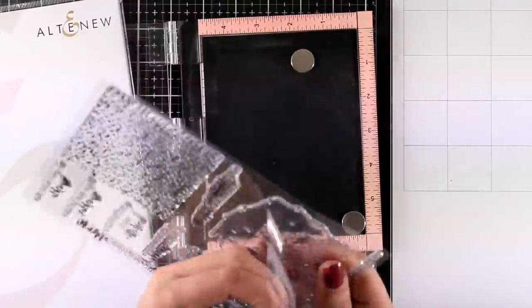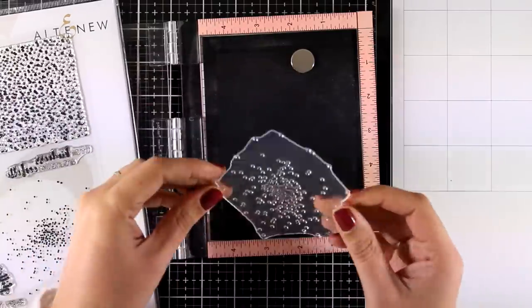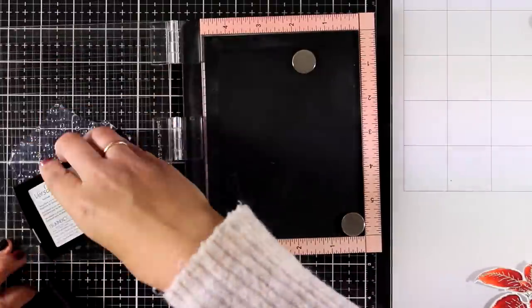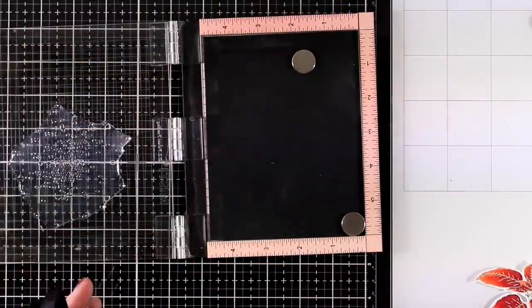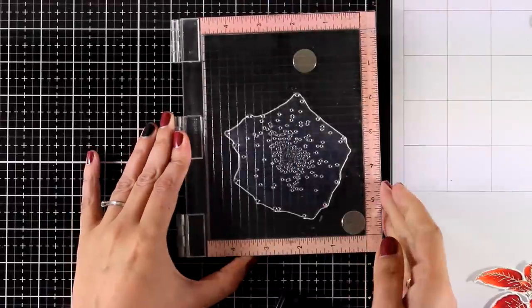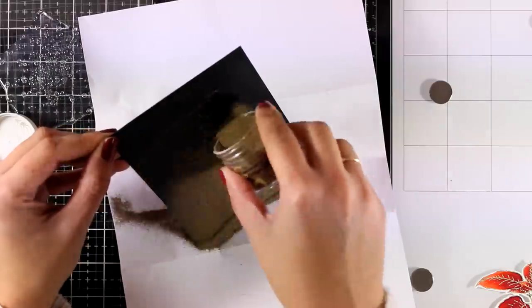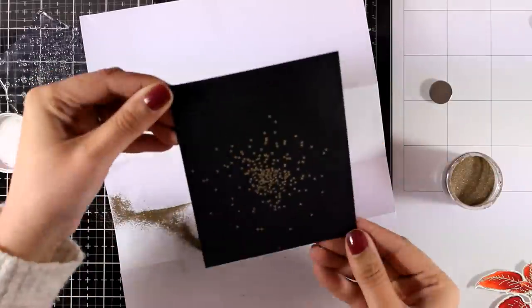I'm going to use this stamp set. It's called Canned Confetti and it's from the latest Altenew release. The idea here is to have some dots, some confetti, scattered all around my background. I'm going to stamp it with VersaMark and then again I'm going to apply my embossing powder, which is Antique Gold.